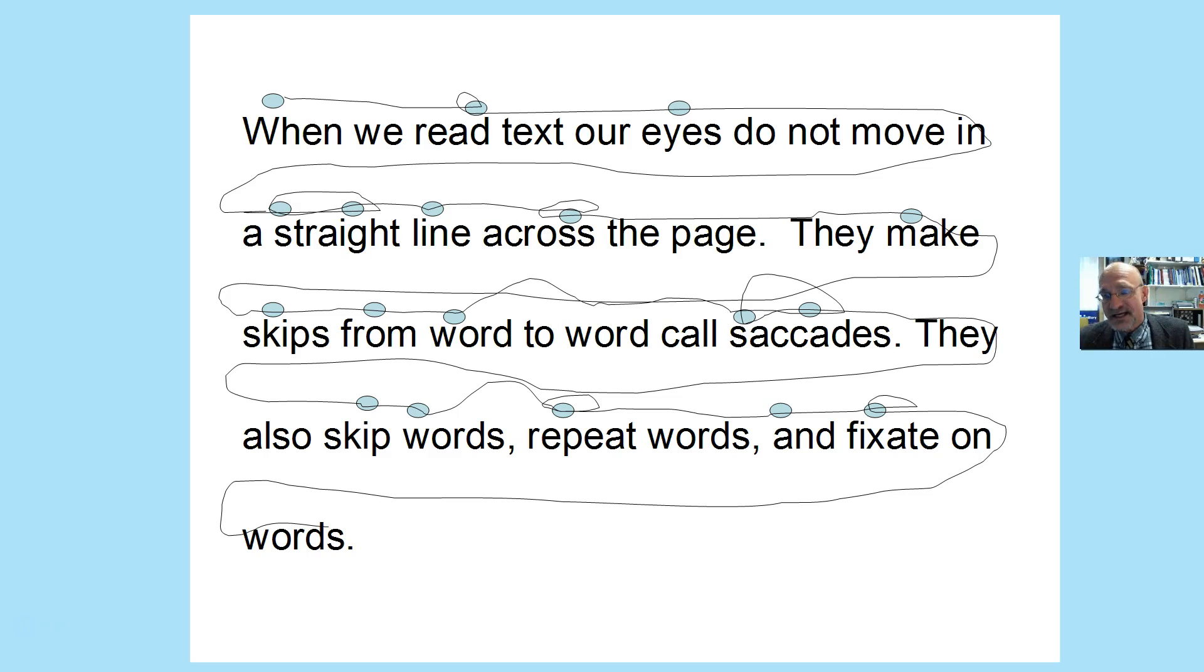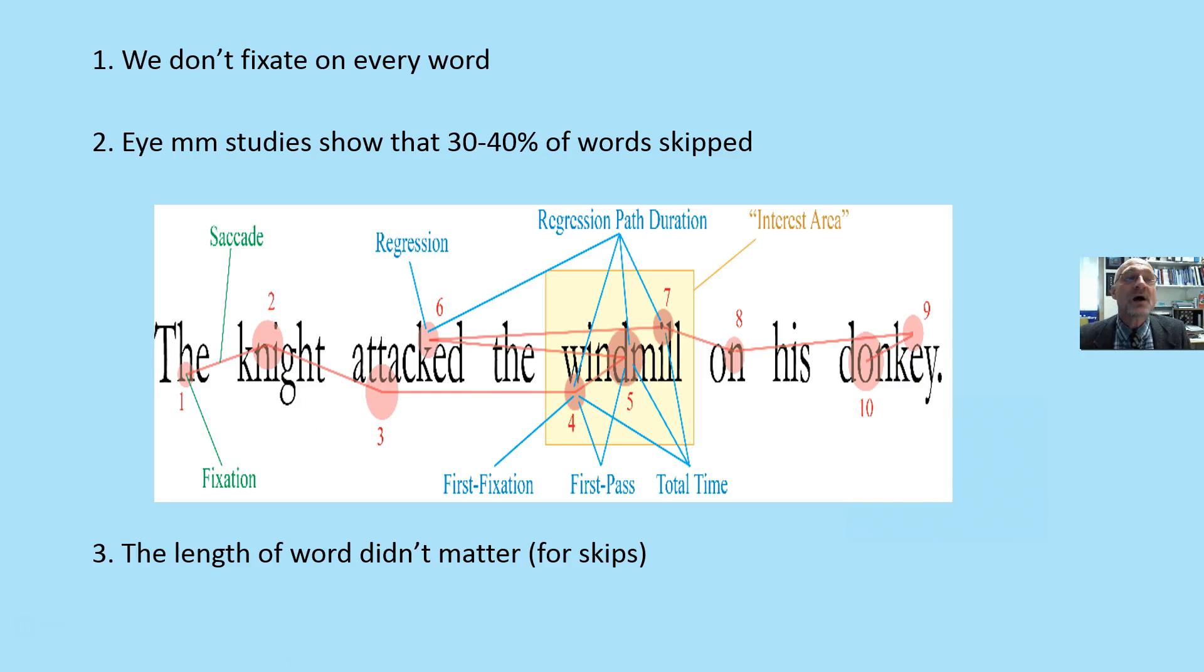When we read text, our eyes do not move in a straight line across the page. They make skips from word to word called saccades. They skip words, repeat words, and fixate on words. That little dot represents a fixation where the eyeball stopped, and we'll look at how many words we stop. We don't fixate on every word. We don't read word by word. We do not fixate on every letter.